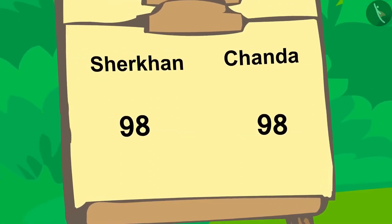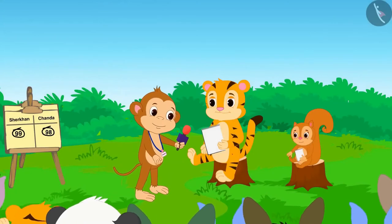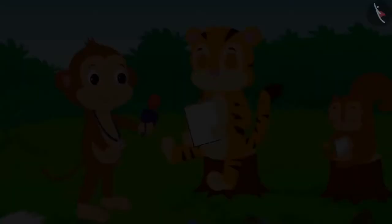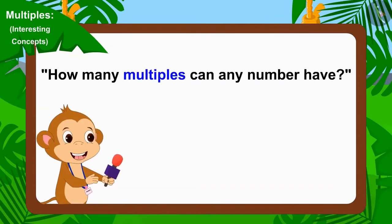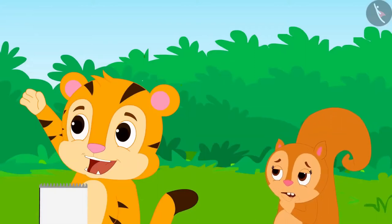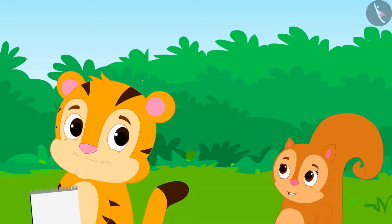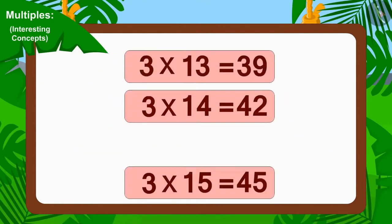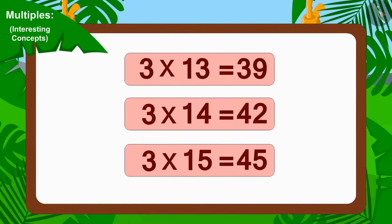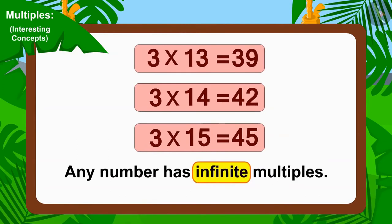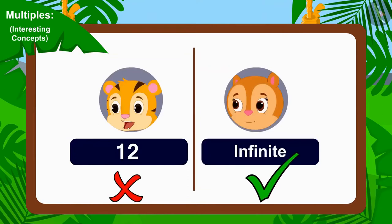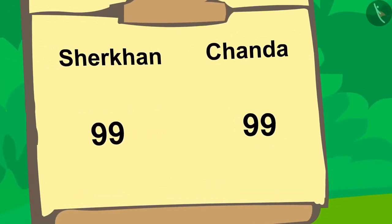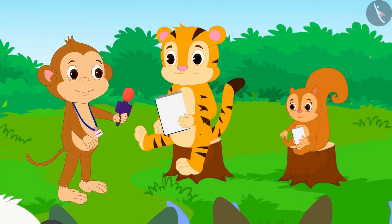Sheer Khan is now one point ahead of Chanda. Let's see what is the next question. Babban asked the next question: How many multiples can any number have? Sheer Khan immediately replied 12 and Chanda answered infinite. Children, can you tell whose answer is correct? We can multiply any number with infinitely many numbers. So, any number has infinite multiples. This means Chanda's answer is correct.